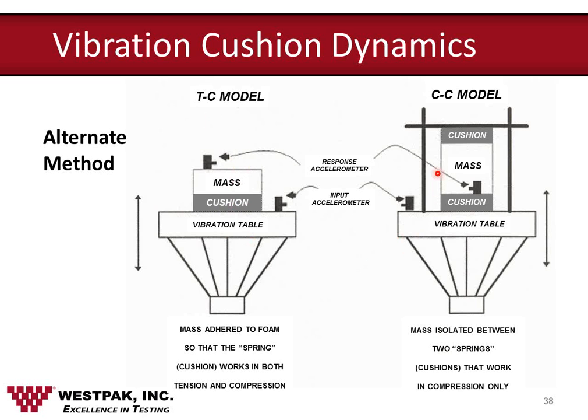For those applications where cushions are used in compression only — which is probably the vast majority of situations — the compression model is used. Here we see the mass with the cushion above and below it. On the down cycle, the upper cushion is in compression and the bottom cushion is not functional; on the up cycle, the bottom cushion is in compression and the top cushion is not functional. We call this the compression-compression model. It's important that these two be identified as different because the cushions are used differently and therefore respond differently.